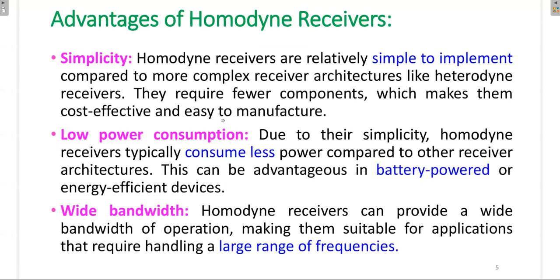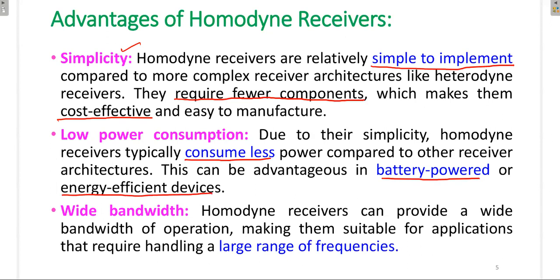The advantages of the Homodyne Receiver are: it is a very simple receiver because it directly down-converts the RF signal into the corresponding message frequency signal. It is simple to implement, involves fewer components, is cost-effective, and easy to manufacture. It has low power consumption due to fewer components, so it can be easily used in battery-powered or energy-efficient devices. It also supports wide bandwidth, making it suitable for handling a large range of frequencies.